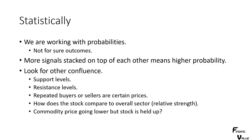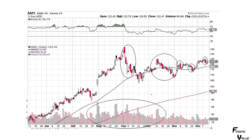Now, we are working with statistics here - probabilities, not sure outcomes. More signals stacked on top of each other means higher probability. Look for confluence. Look at support levels, resistance levels, repeated buyers or sellers at certain prices. How does the stock compare to the overall sector? Is it relatively strong? Are commodity prices going lower but the stock is holding up? Look for all of the clues. In Apple, I would look at a bunch of other tech companies to see if they exhibit this same type of pattern - the same momentum and velocity changes. And I think some of them are.